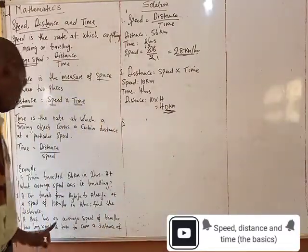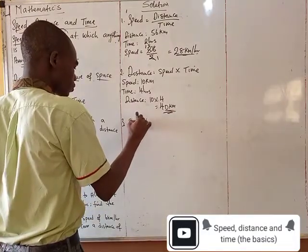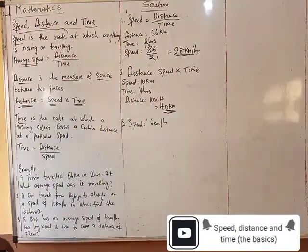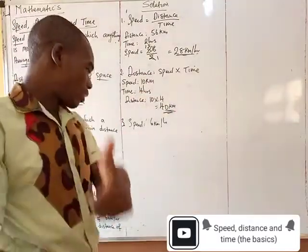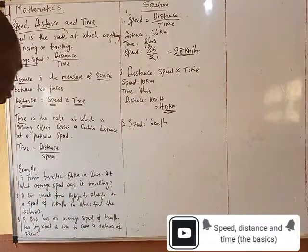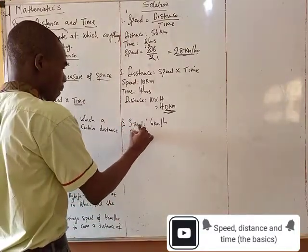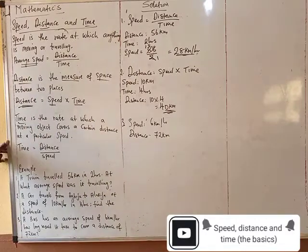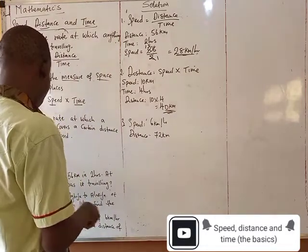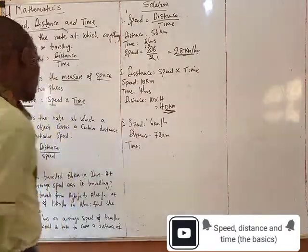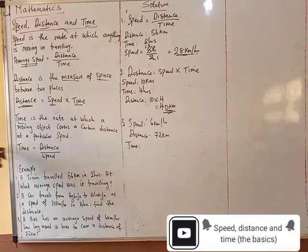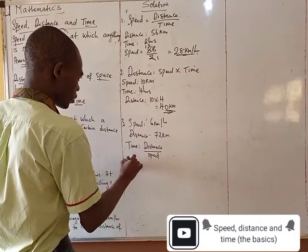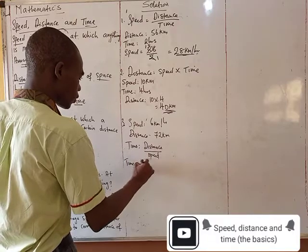Number 3. What is it about? A bus has an average speed of what? 6 kilometers per hour. How long? How long? You know, I told you that. How long talks about what? Fantastic. Talks about time. So the speed is 6 kilometers. And the distance is 72 kilometers. So what are you looking for? Are you looking for what? Time. And how do you find time? The formula is what? Distance over speed.